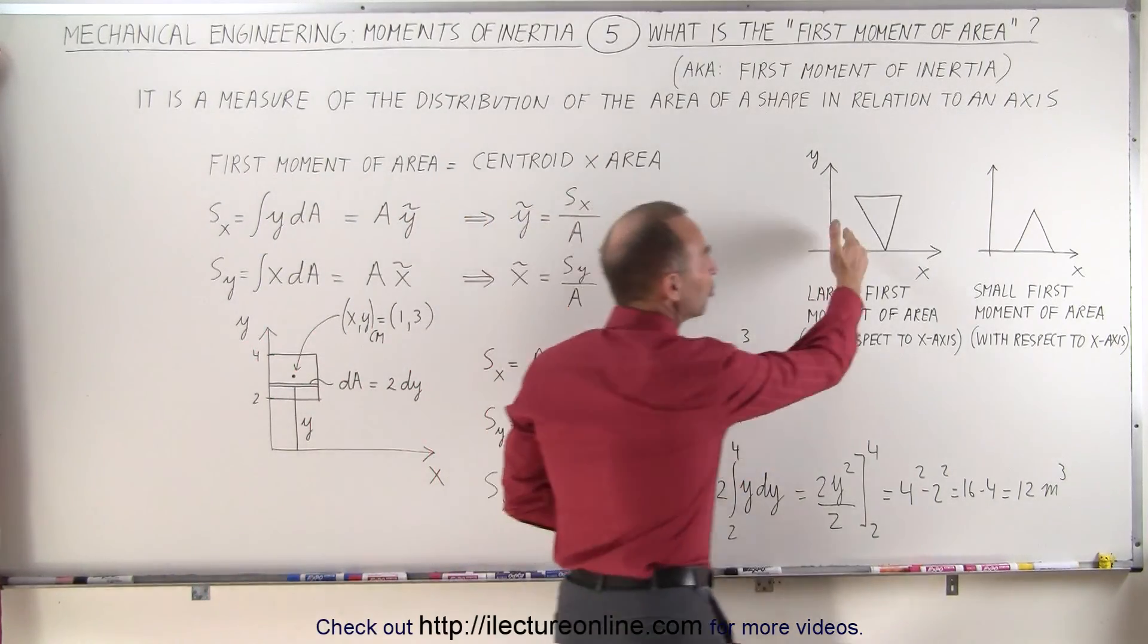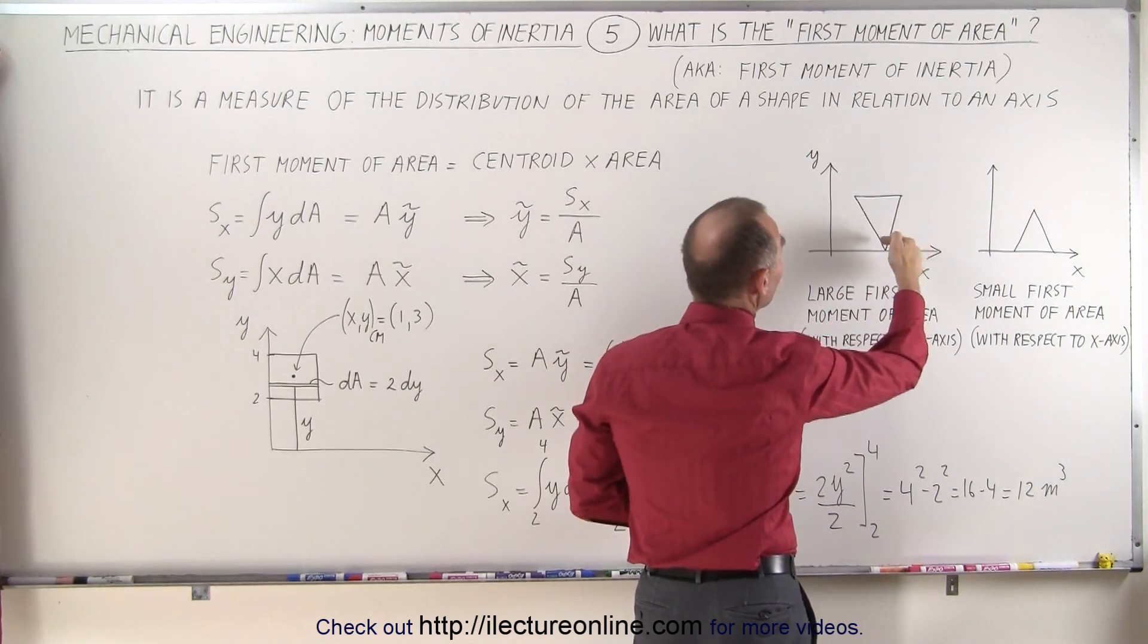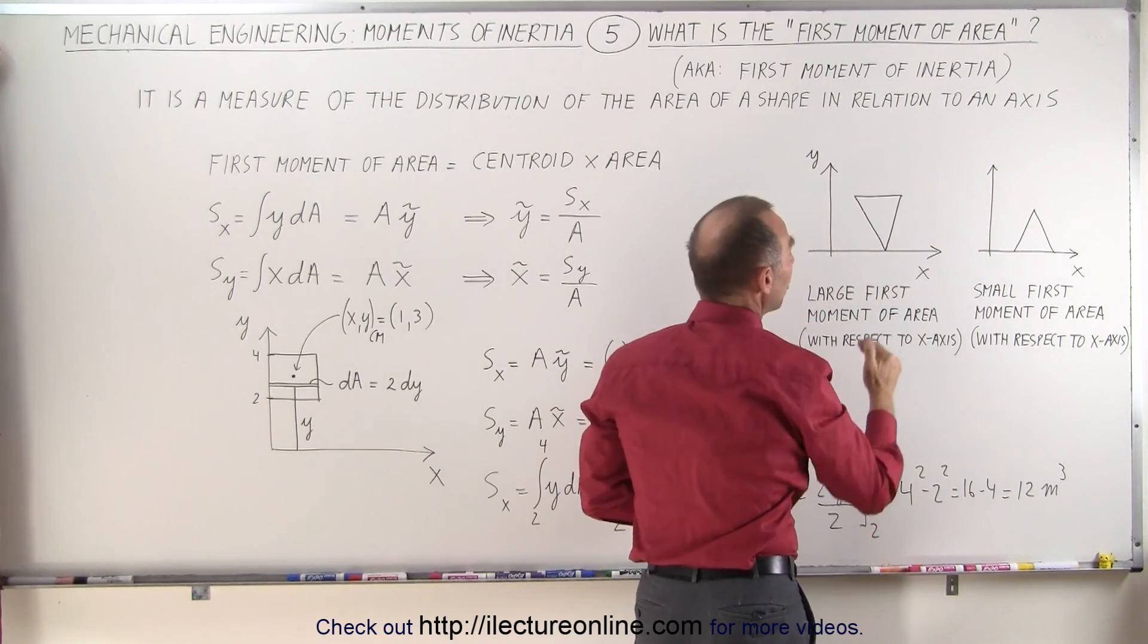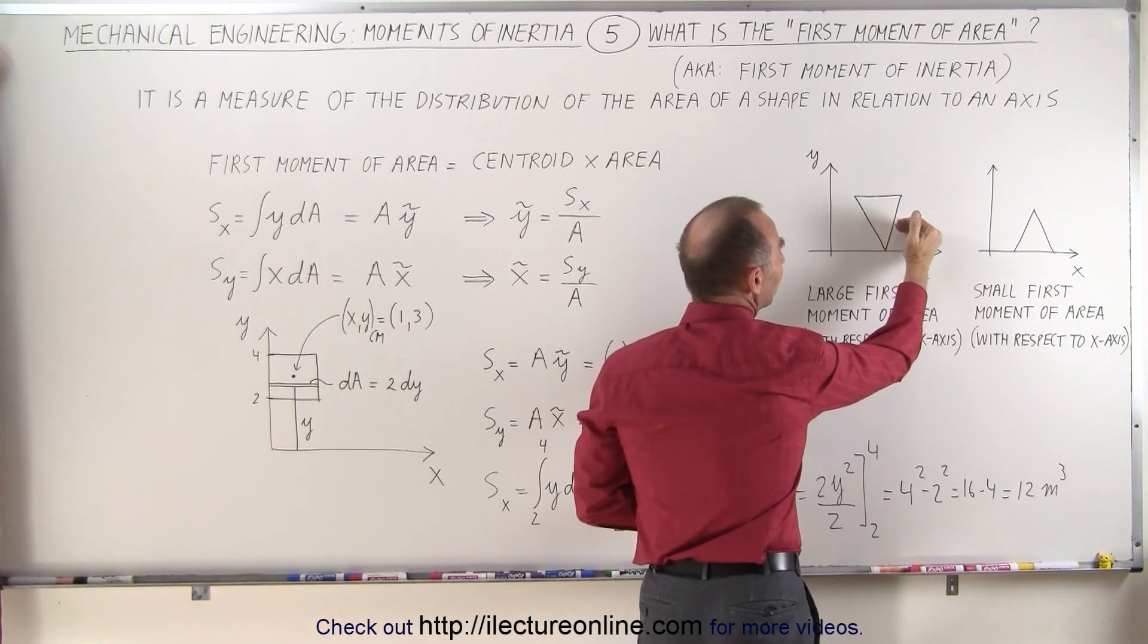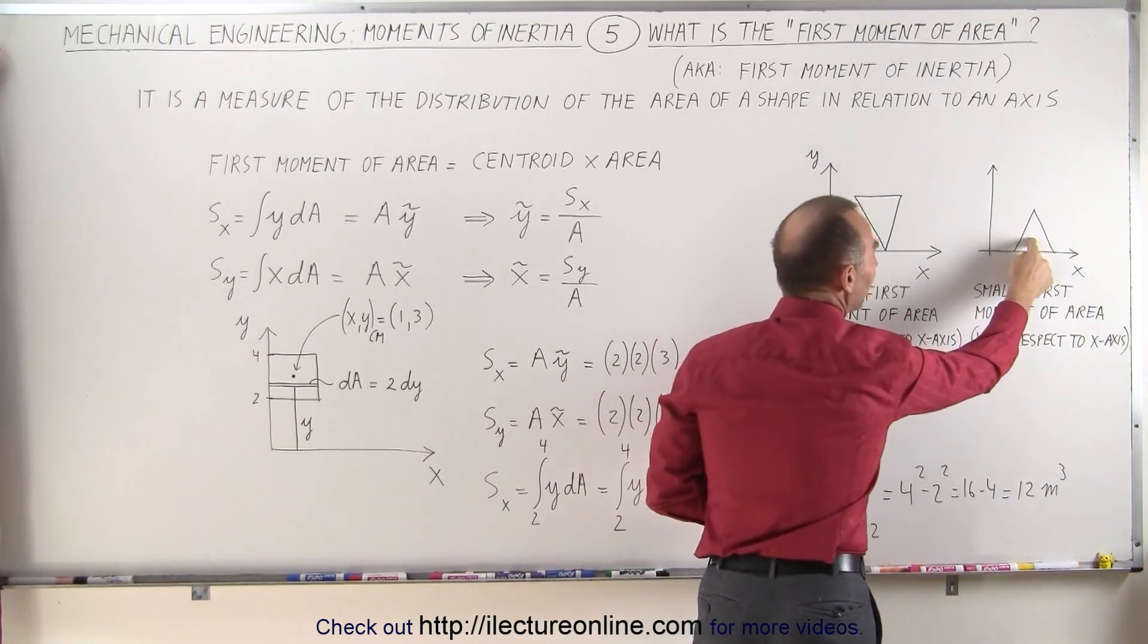For example, here we have two triangles and we're trying to find what we call the first moment of area of each of these two triangles. Notice that more mass of this triangle is farther away from the x-axis than in this example here, where most of the mass is much closer to the x-axis.